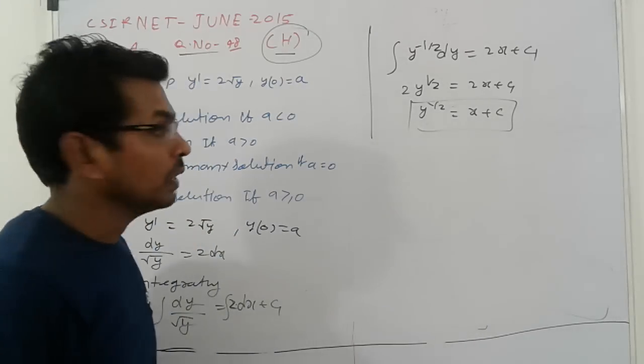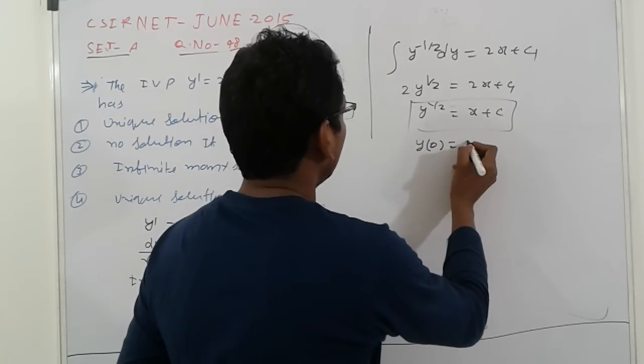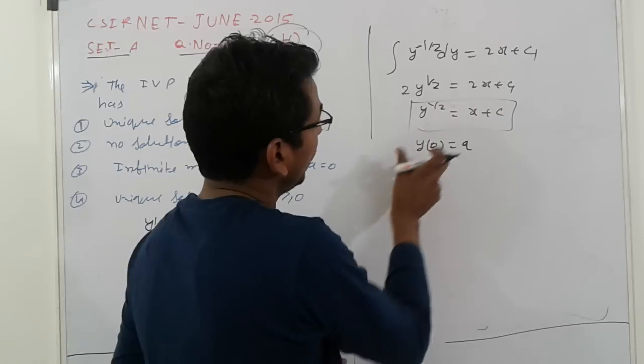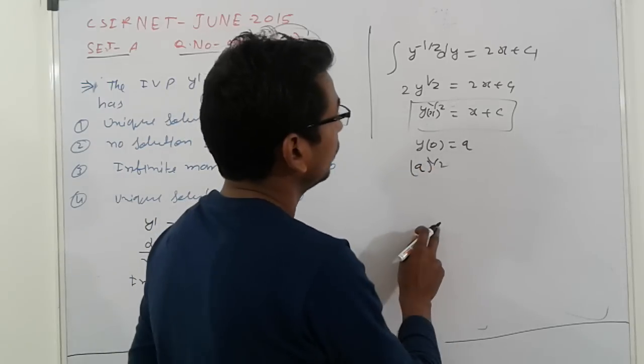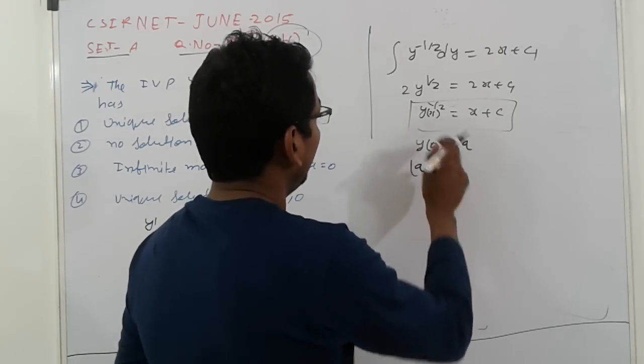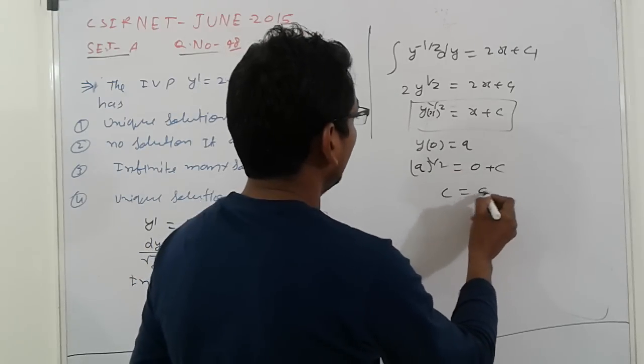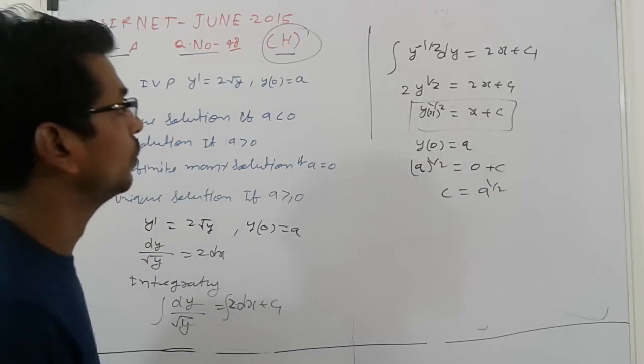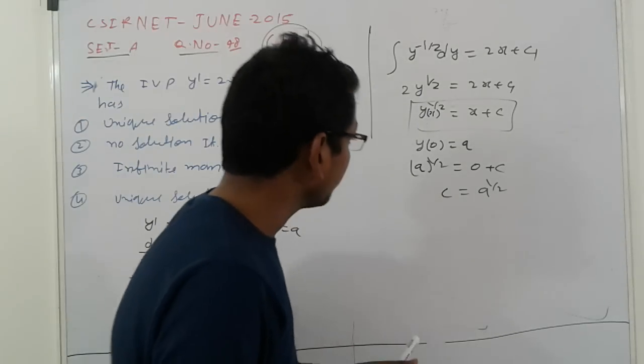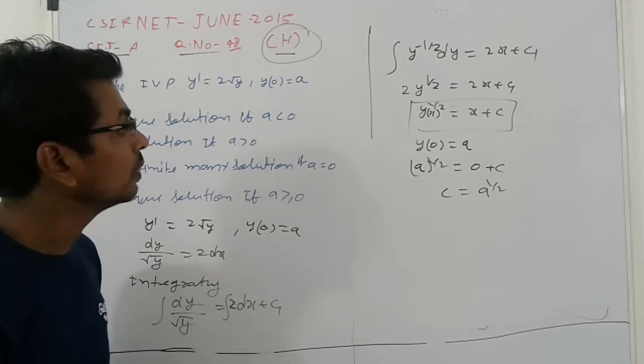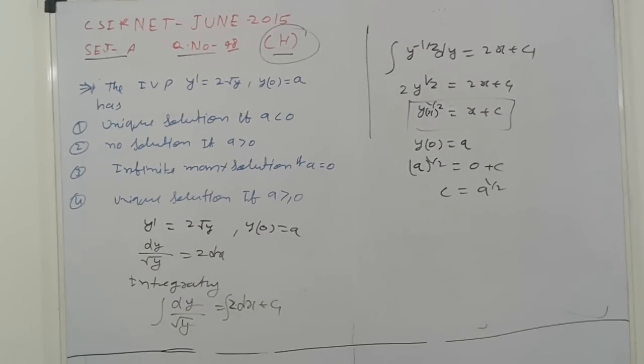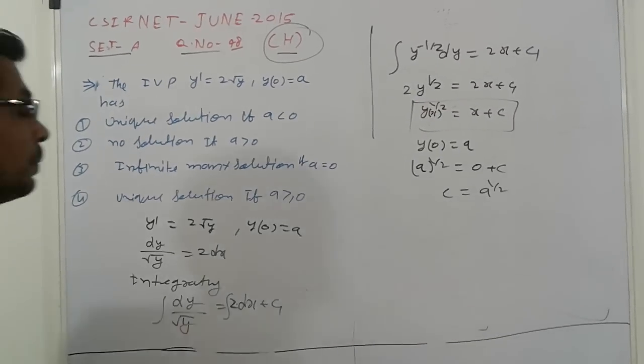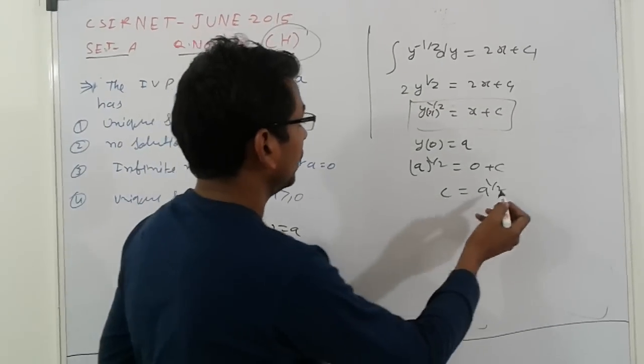For what value of c? The condition is given y(0) = a. Put here: y(0) = a, so a^(1/2) = 0 + c. Therefore c = a^(1/2), c = √a.